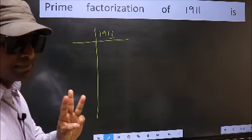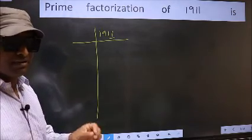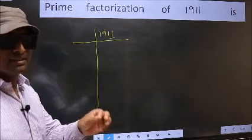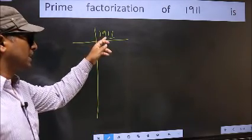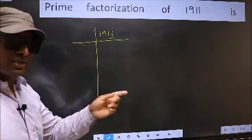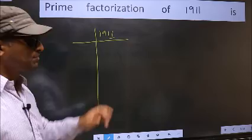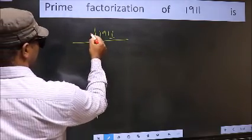Next, prime number 3. To check divisibility by 3, we should add the digits. 1 plus 9 plus 1 plus 1 equals 12, and 12 is divisible by 3. So this number is also divisible by 3. Take 3 here.